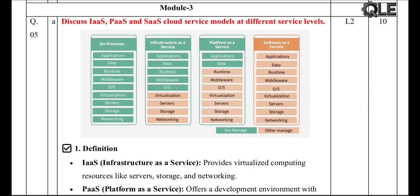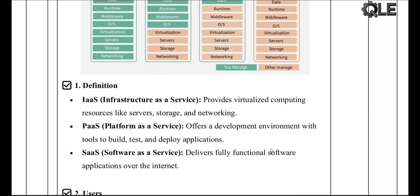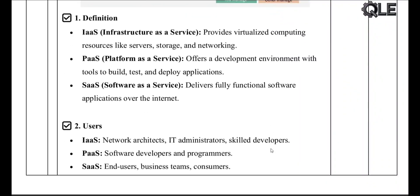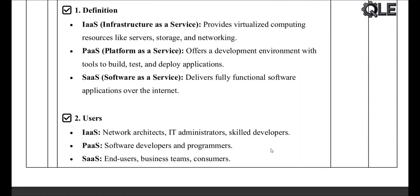Hello and welcome back to Quick Learn Engineering. Today we'll explore the three main cloud service models: IaaS, PaaS, and SaaS. We'll keep it simple with definitions, examples, and even a food analogy to help you remember. First, what are IaaS, PaaS, and SaaS? Let's start with quick definitions.